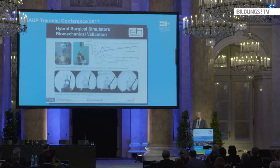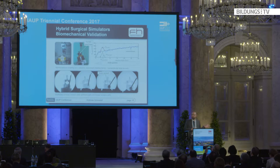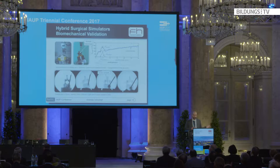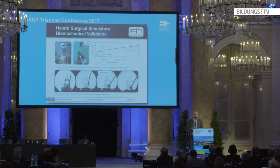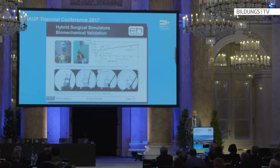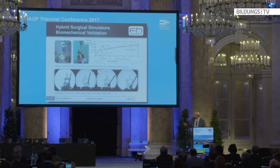Validation is a very important aspect. The first step is biomechanical validation: we have the artificial anatomy and want to know whether the haptic sensation is correct. We perform measurements with human specimens and compare whether our artificial anatomy behaves identically or very realistically. For example, we compare needle insertion into artificial vertebrae with needle insertion into a human specimen vertebra, and adjust the artificial bone to achieve good agreement.